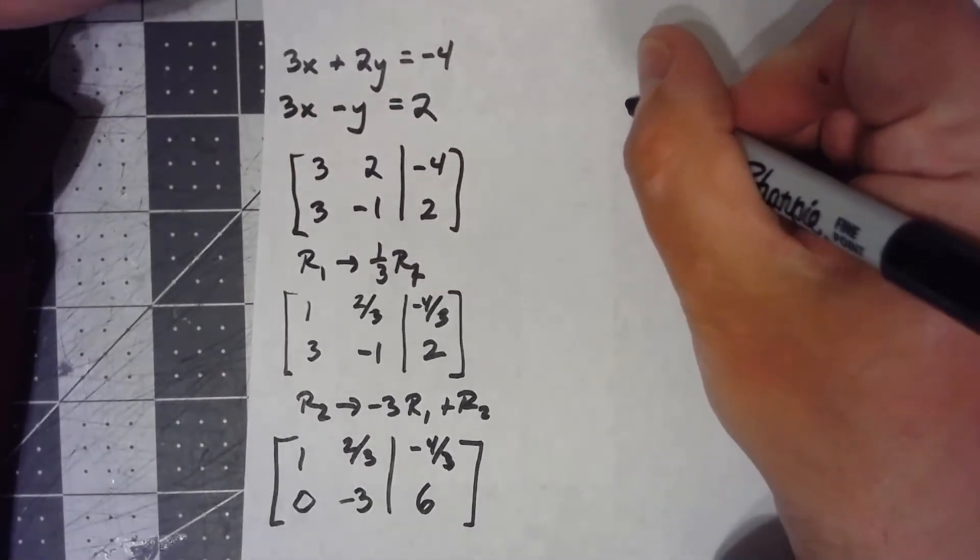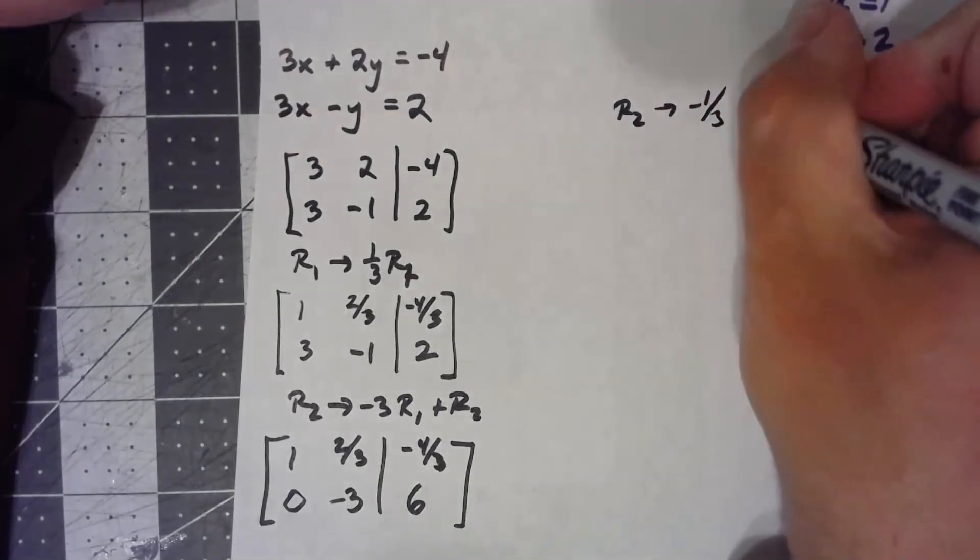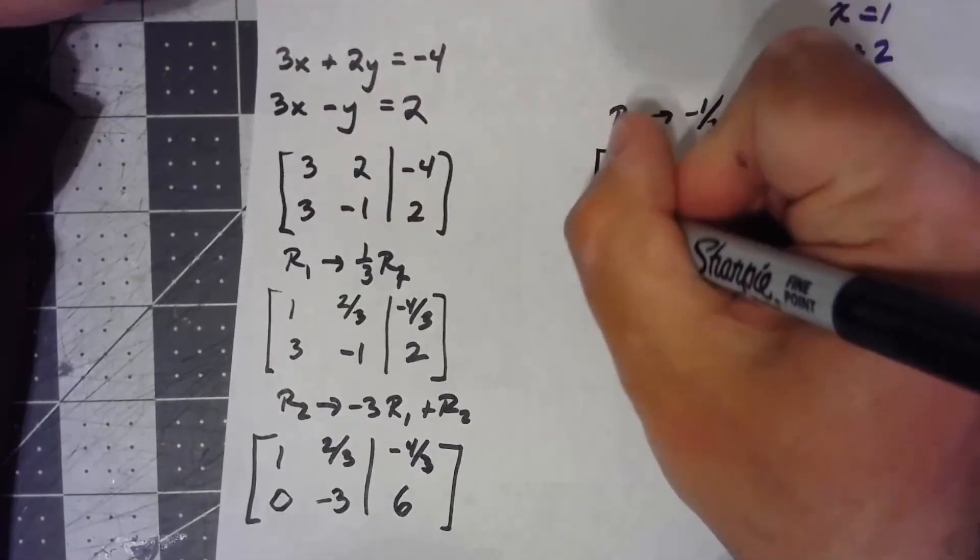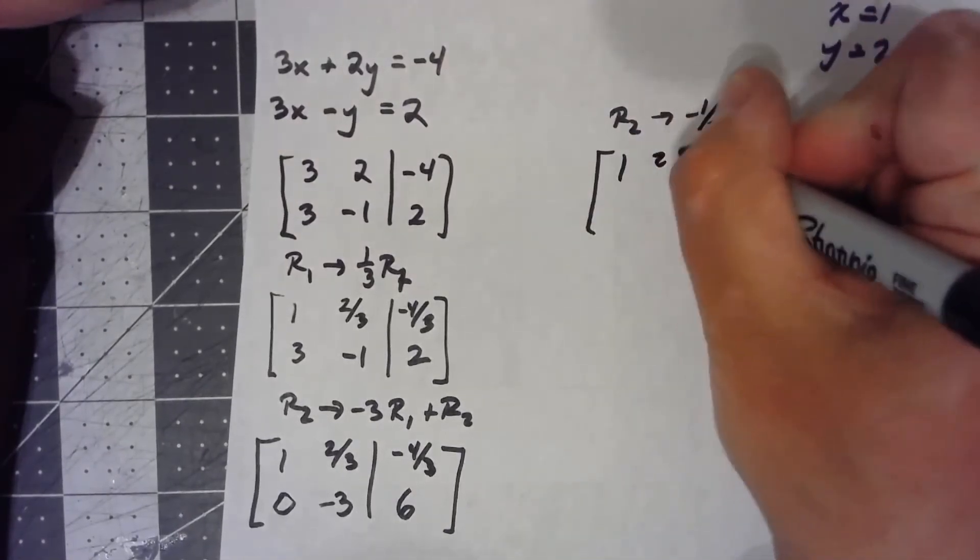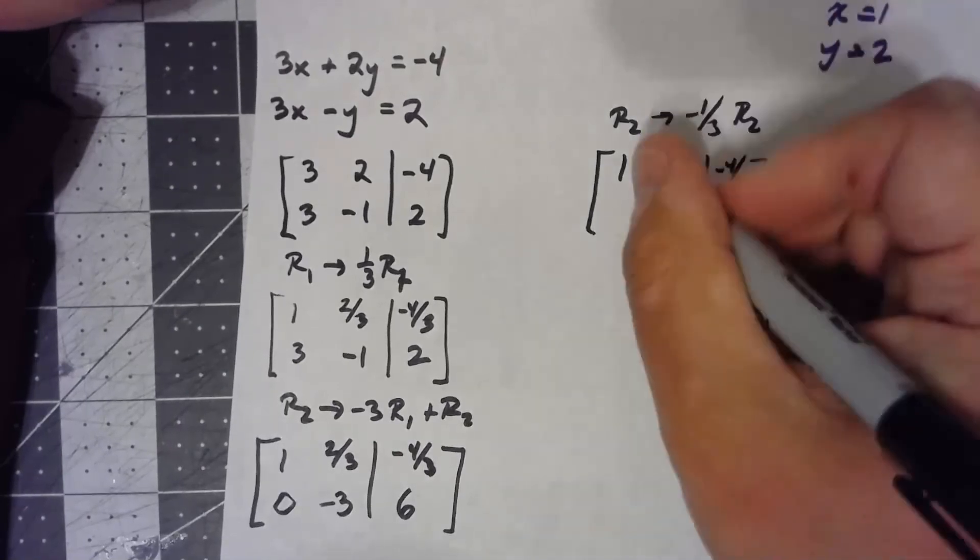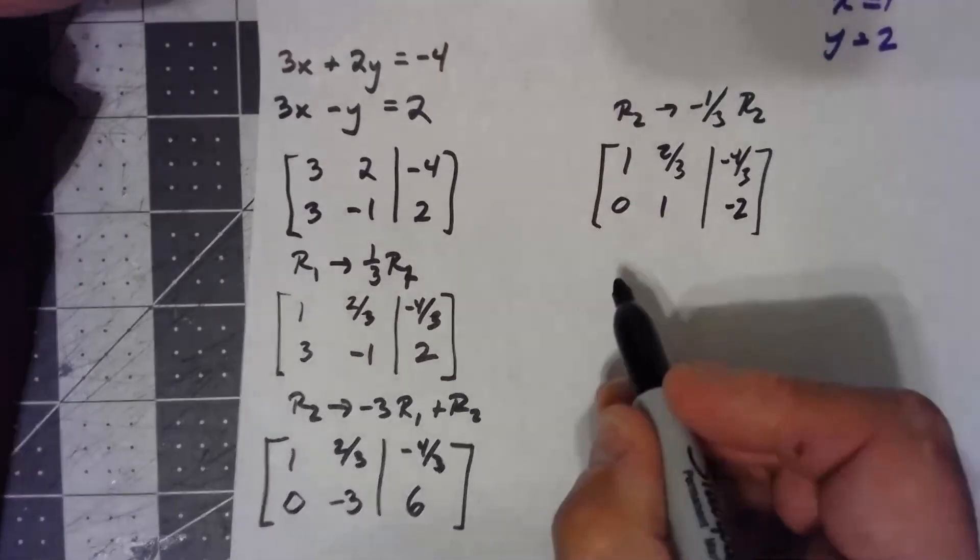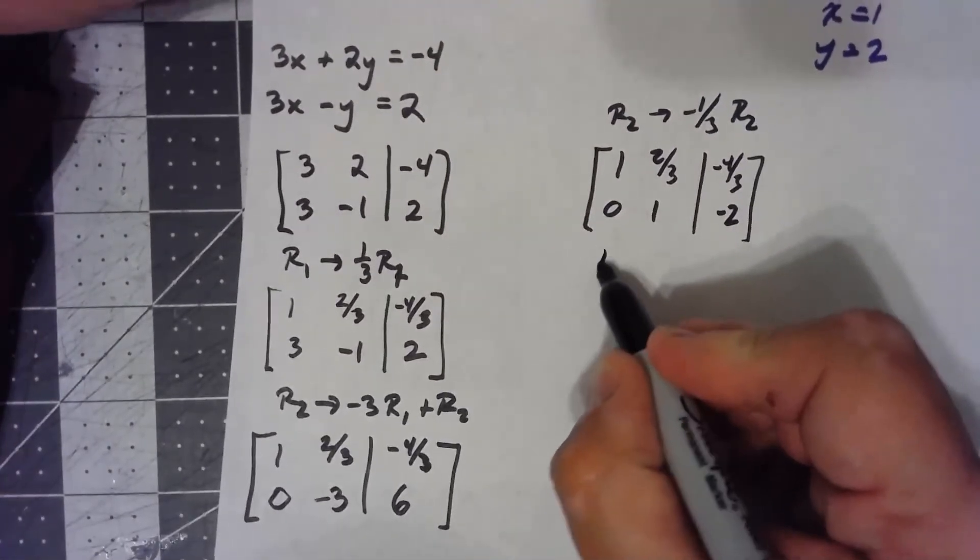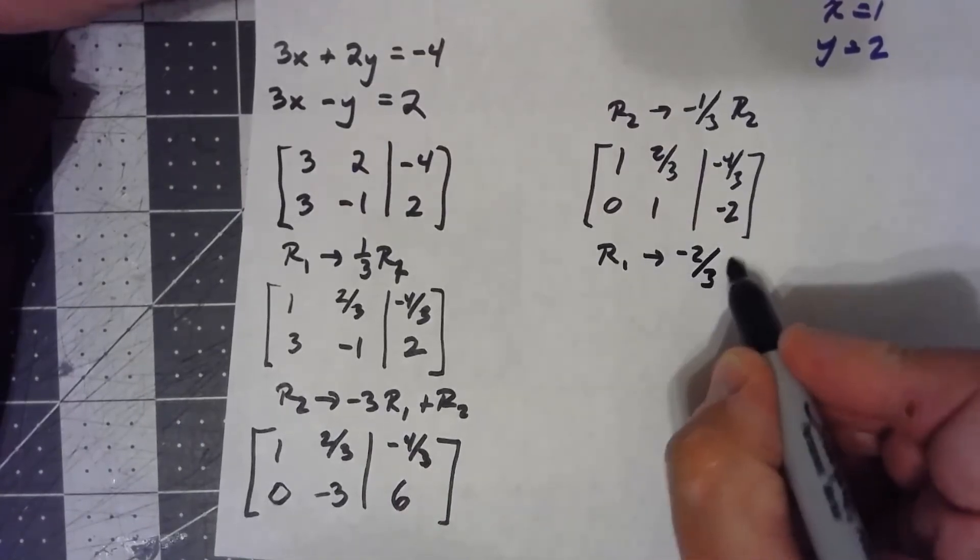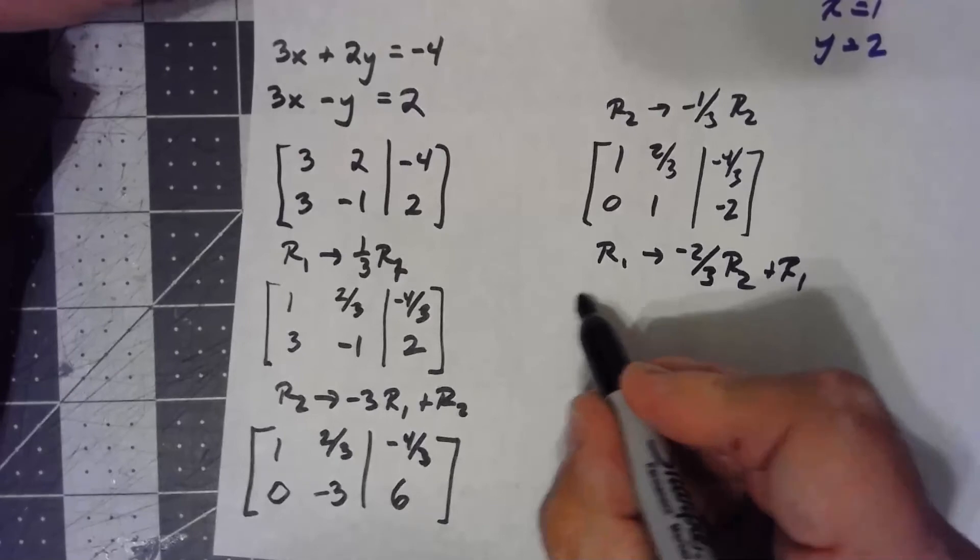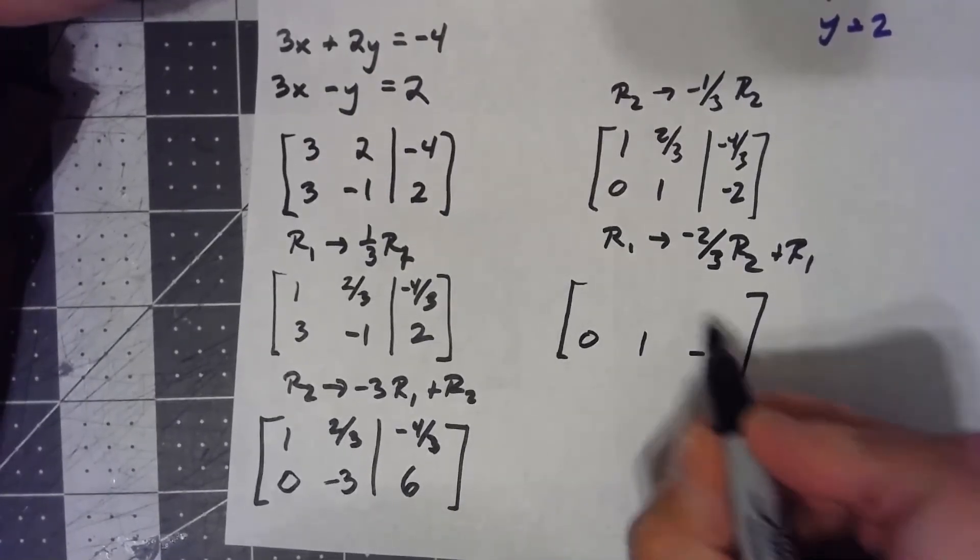Then I can do multiply by the reciprocal there. Row 2 becomes negative 1/3rd row 2. Now I can do... I've got a 0 at the top right. So row 1 becomes negative 2/3rds, row 2 added to row 1. Not changing the second row.